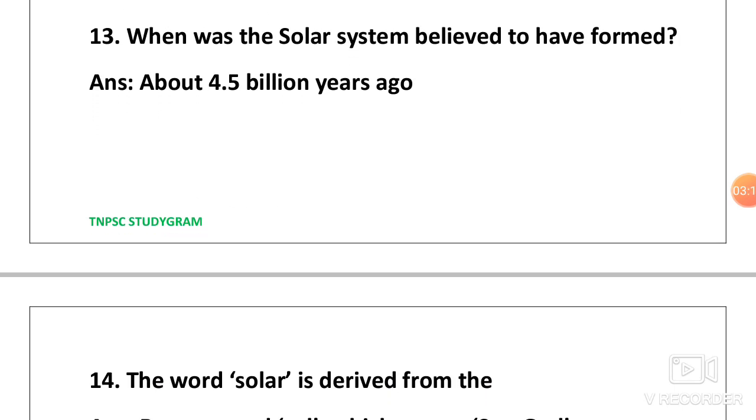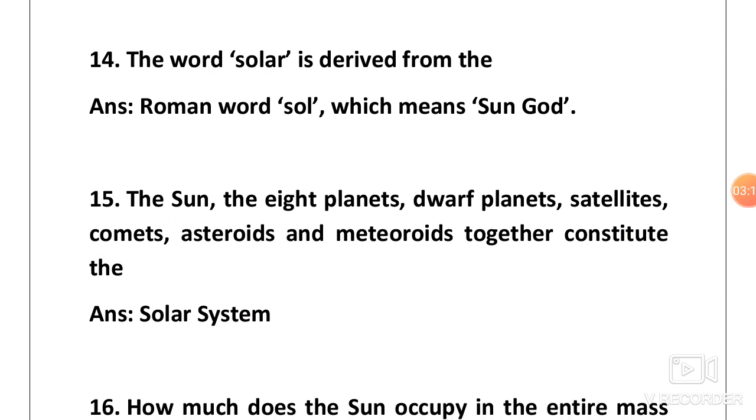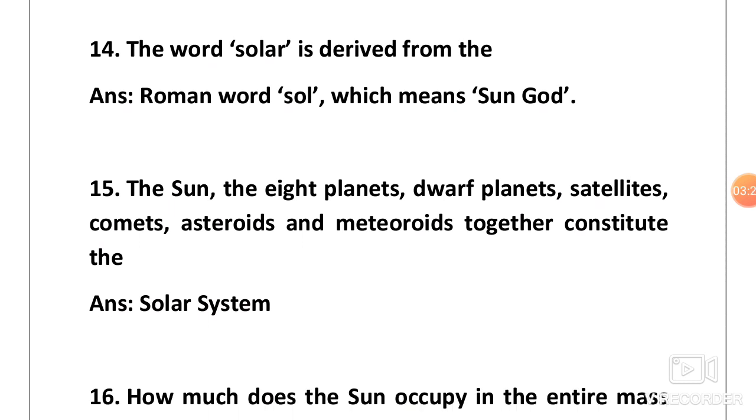Next one, when was the solar system believed to have formed? Answer is about 4.5 billion years ago. Next one, the word solar is derived from? Answer is Roman word Sol which means sun god. The answer is present in the word solar itself. You have to split that. You will get Sol. We know that solar is related to sun, so here it has been derived from sun god.